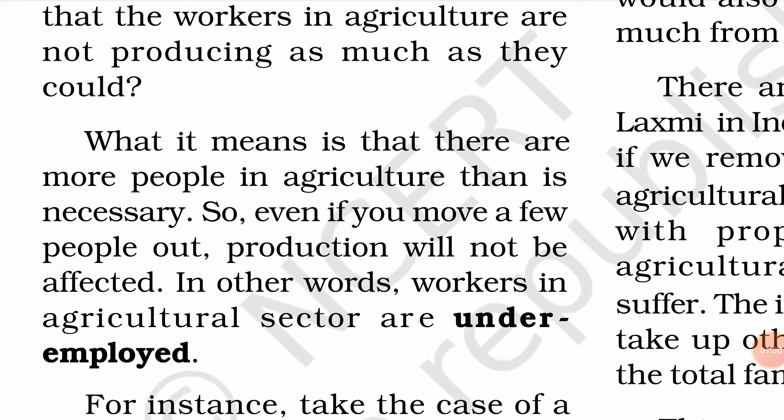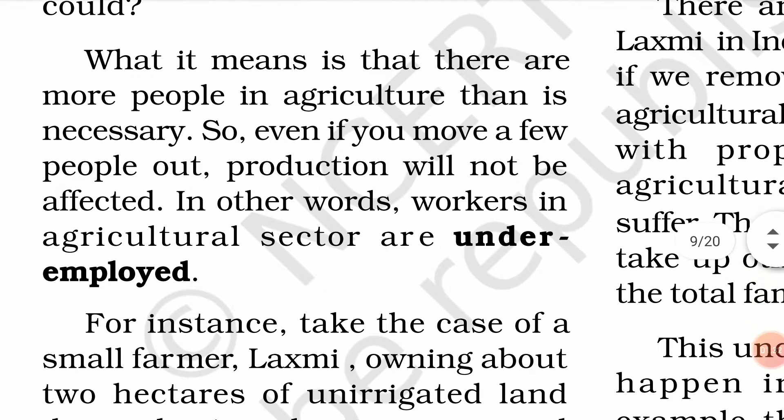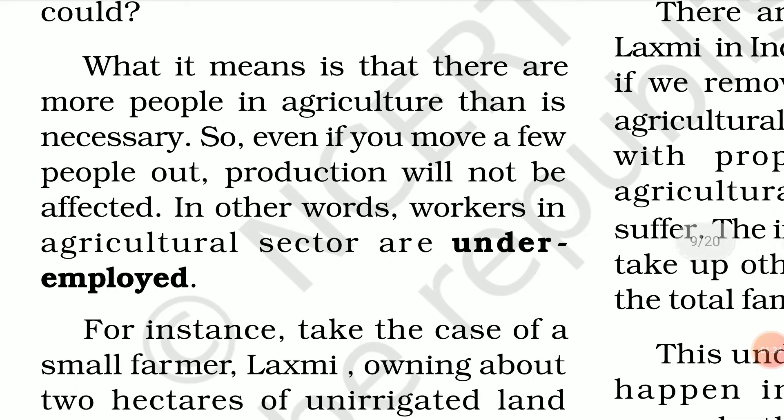Jitna wo produce kar sakte hain, utna wo produce nahi karte hain. What it means is that there are more people in agriculture than is necessary, so even if you move a few people out, production will not be affected. In other words, workers in the agricultural sector are called underemployed. Underemployment, which is also called disguised unemployment, yeh ek aisi situation hoti hai jahan pe log jitne required hai, usse zyada log employed hoti hai.